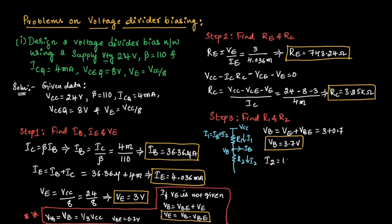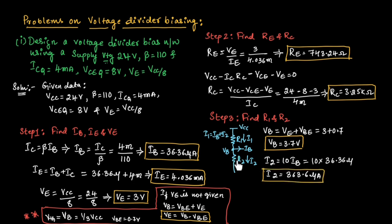We can write I2 equal to 10 times IB. So I2 equals 10 into 36.36 microamperes, giving I2 equal to 363.6 microamperes. From the circuit, we can find R2 as VB divided by I2. So R2 equals 3.7 volts divided by 363.6 microamperes. The value of R2 is equal to 10.176 kilo ohms.